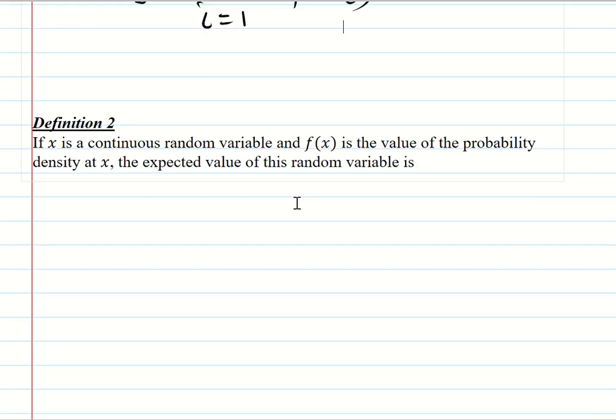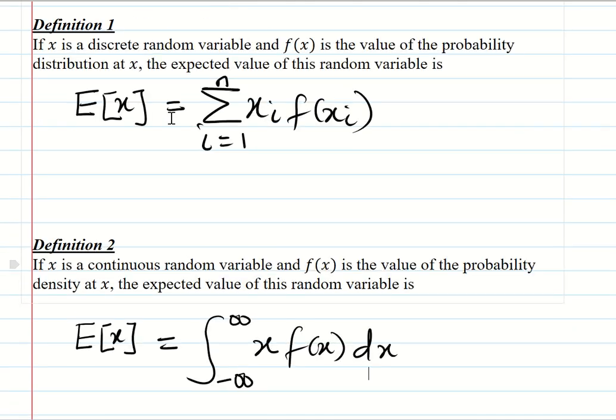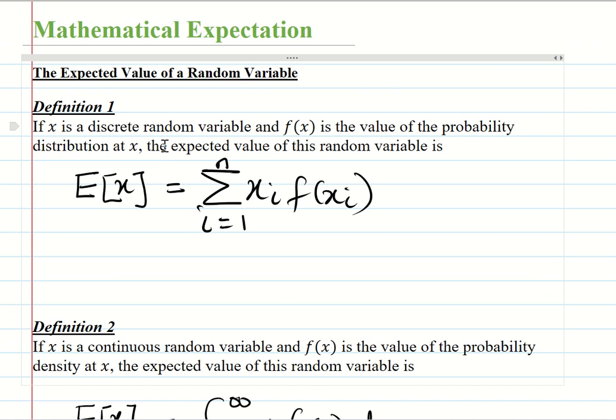For a continuous random variable, it is defined as expectation of X, which is equal to the integral from negative infinity to positive infinity of x times f(x) dx. This definition is actually the long-run average outcome of a random variable based on its possible outcomes and their expected probabilities.